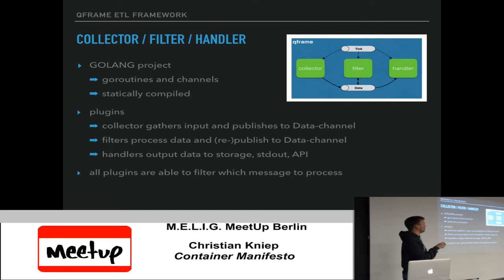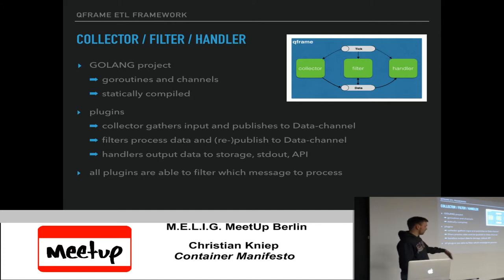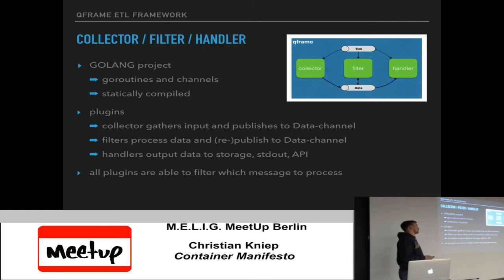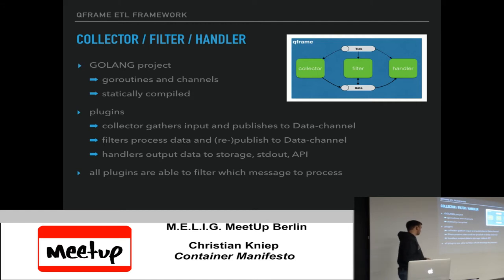In Logstash you have inputs, filters, and outputs. I called them differently to make a distinction, but basically it's input and output. A collector collects information and puts it into a pipe. In Go you have goroutines and channels, so it pushes the information down the channel. A filter can then apply — say, it receives a log line that looks like a metric, transforms it into a metric, and pushes it to a metric output. I want different plugins for each part: collector plugins as inputs, filters to process and republish, and handlers to output to some back-end. All plugins should be able to filter different inputs — if a filter cares about logs, it should only subscribe to the log channel.